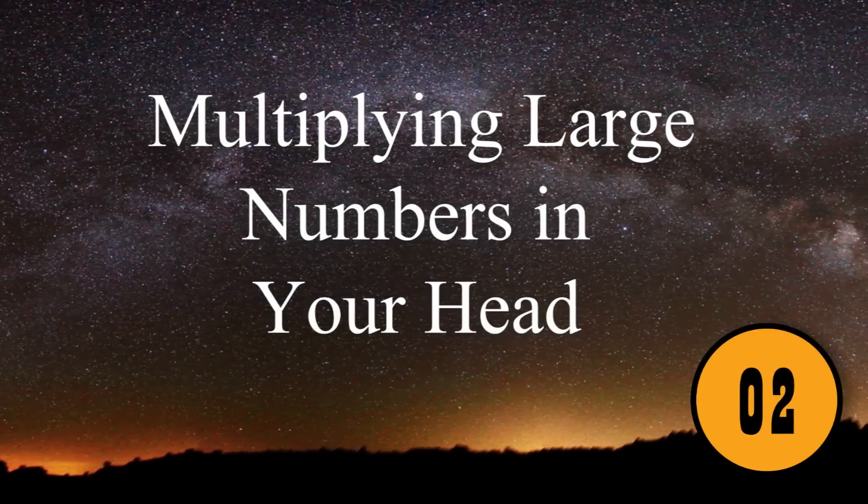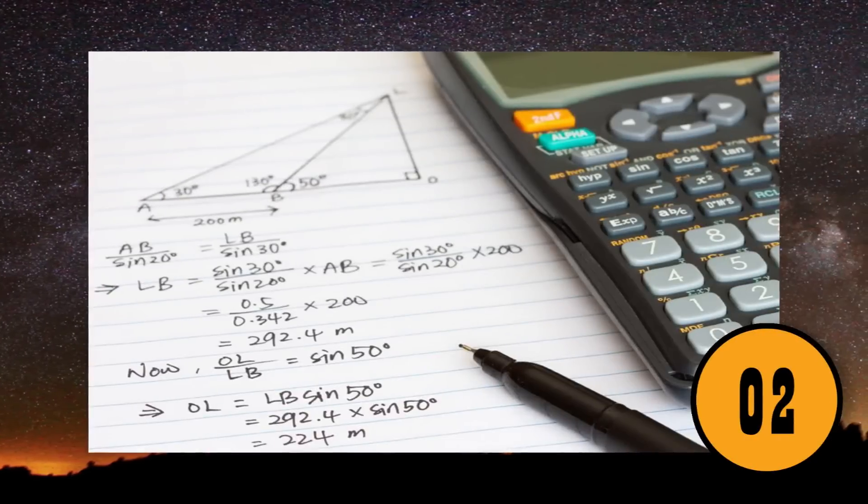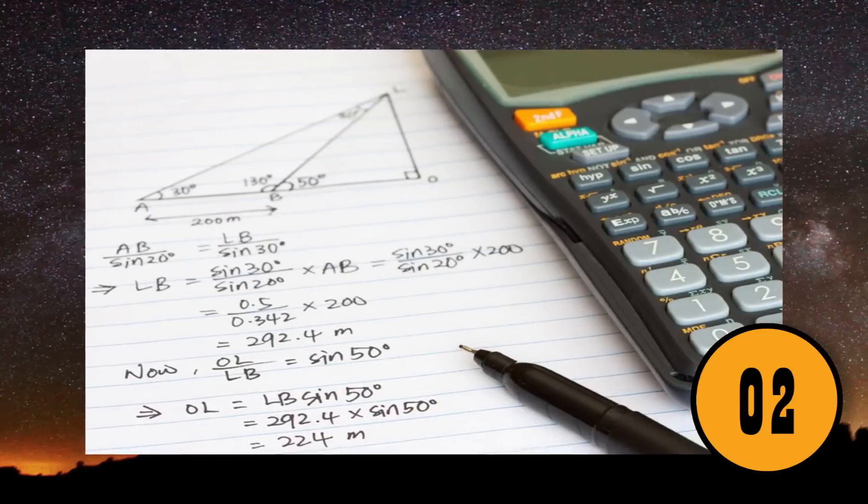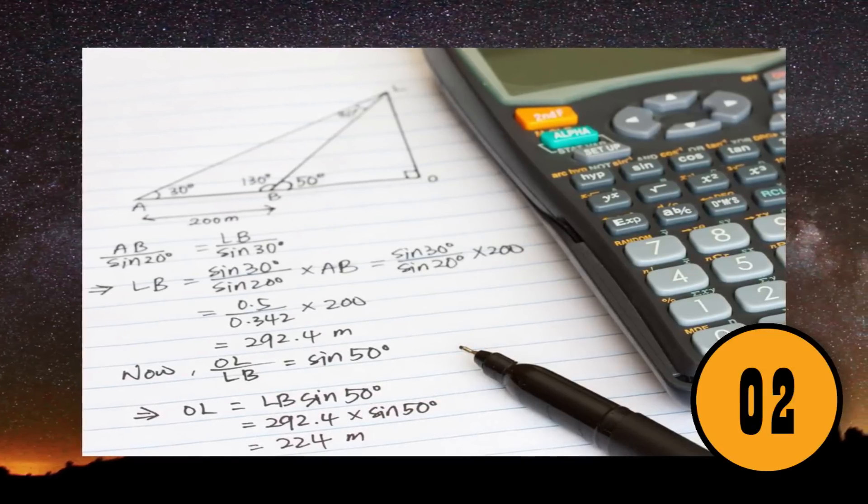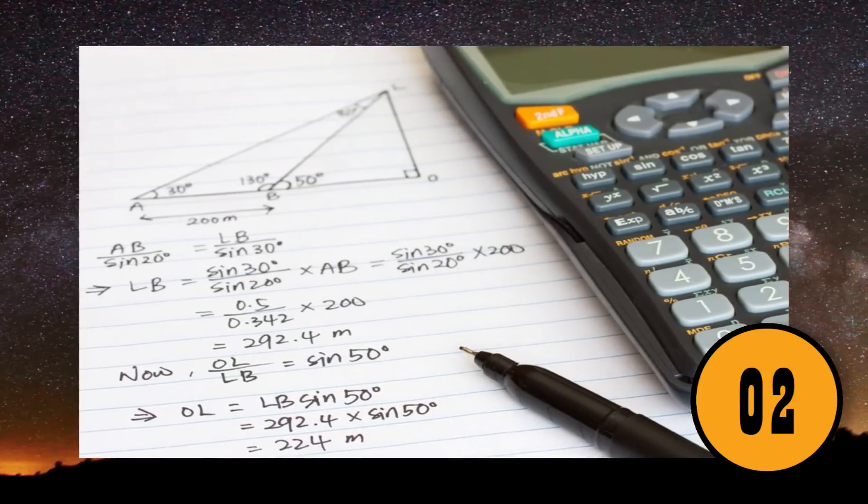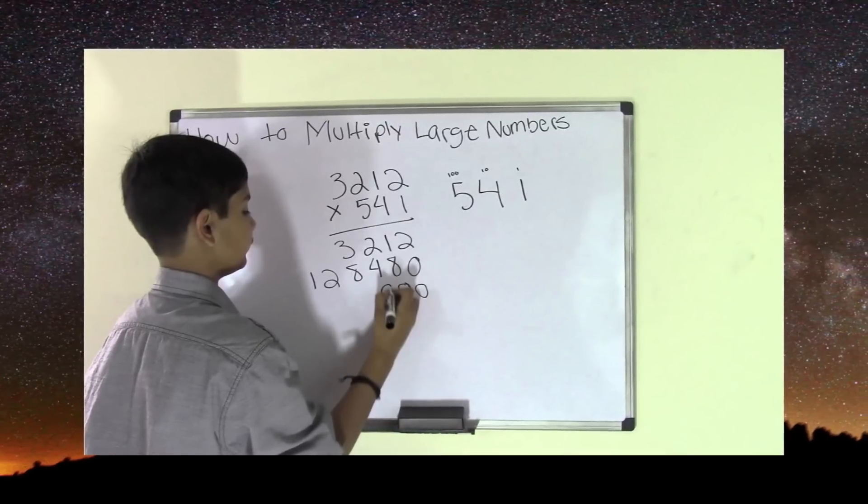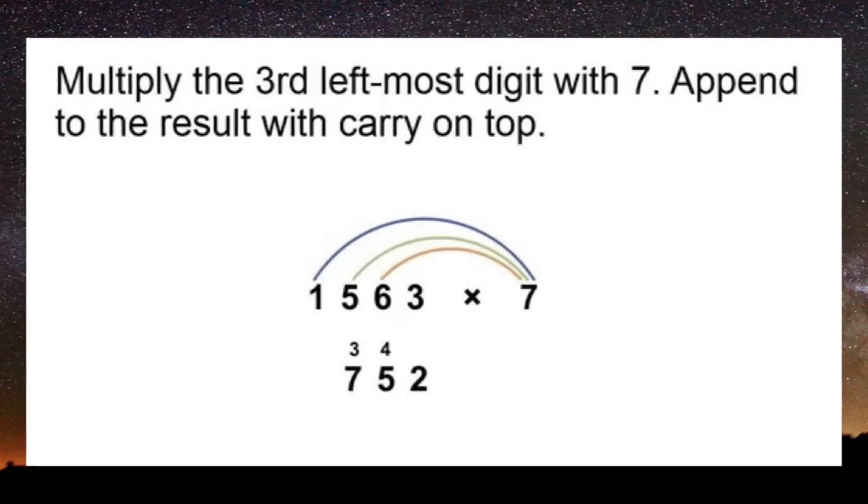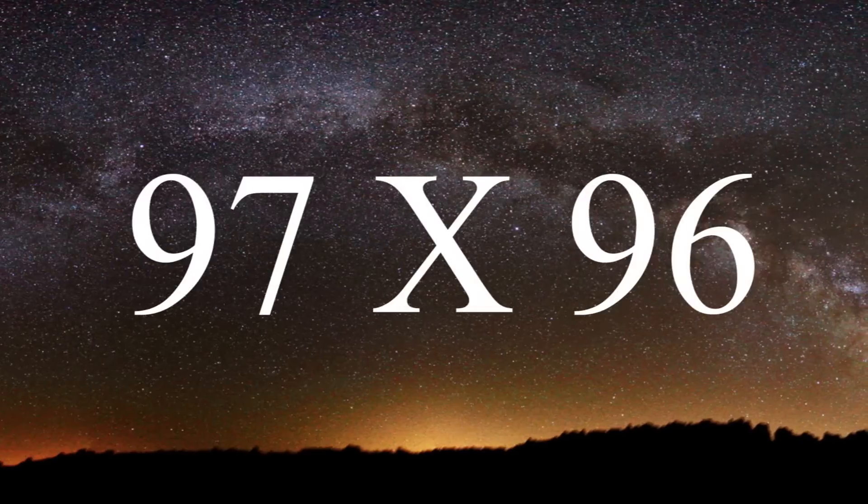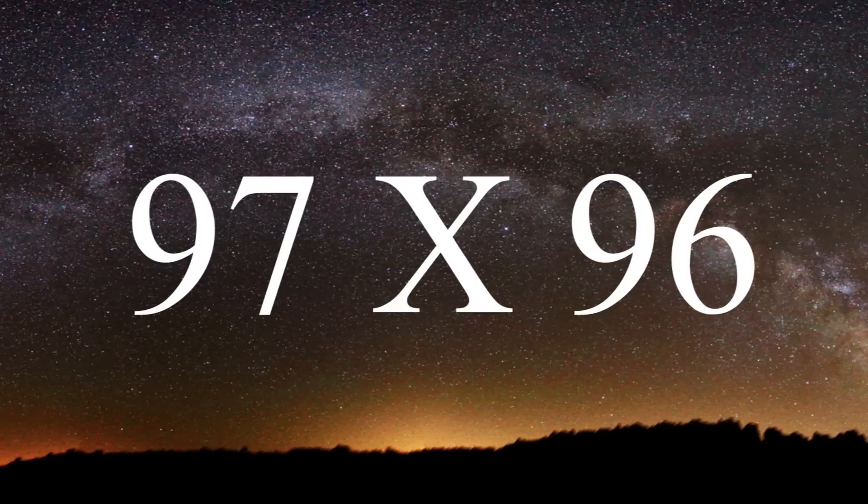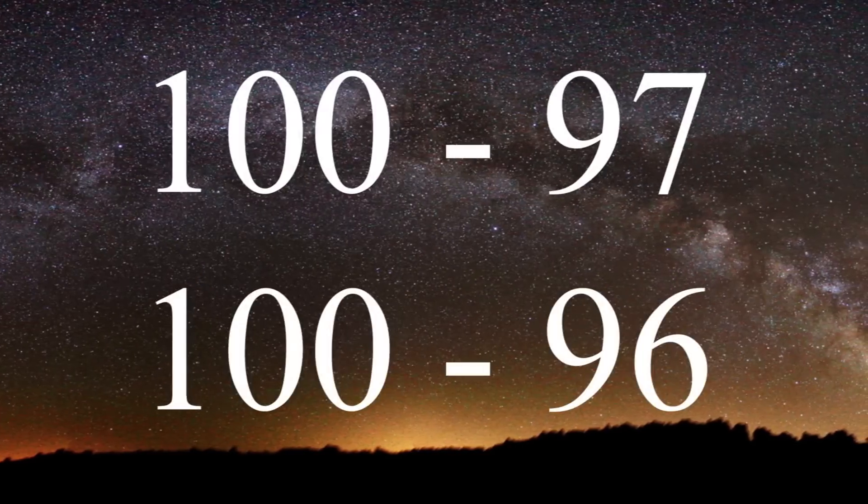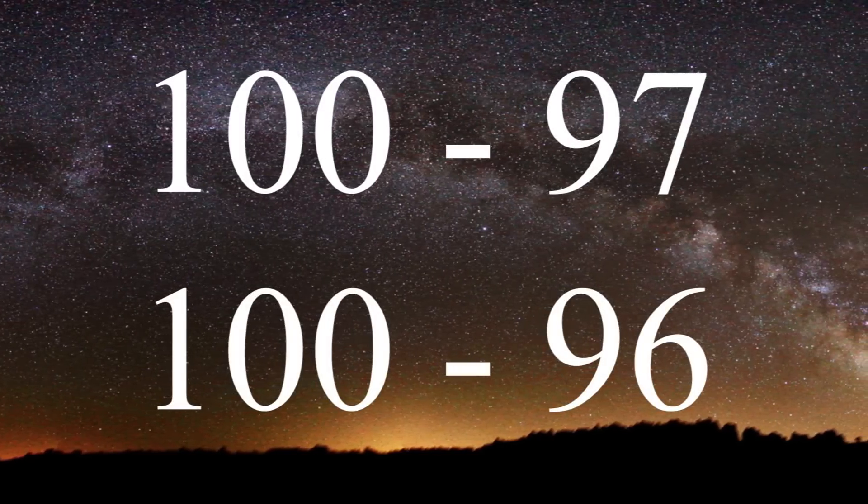2. Multiplying Large Numbers in Your Head. When most people need to multiply large numbers, they often reach for a pen and paper or for the calculator on their phone. If you struggle with multiplication, there are ways that you can multiply large numbers in your head. The secret is to break down the large numbers into smaller numbers. For example, if you need to solve 97 times 96 in your head, you break it down by subtracting both numbers by 100.